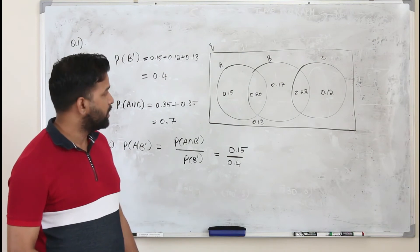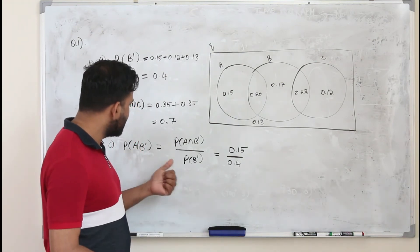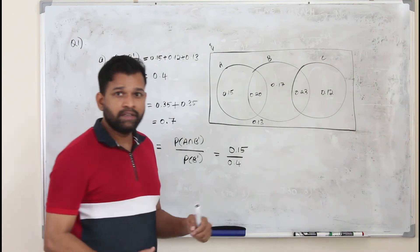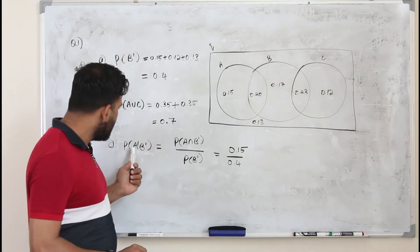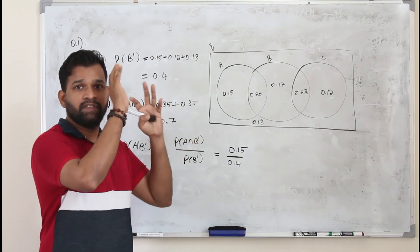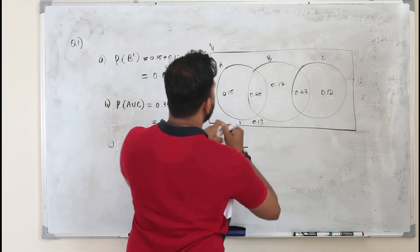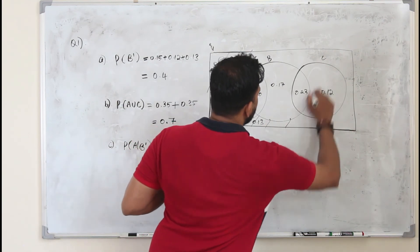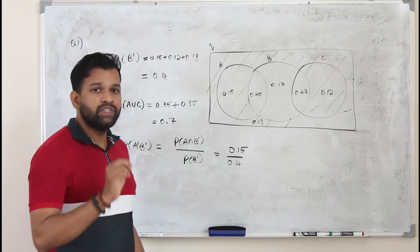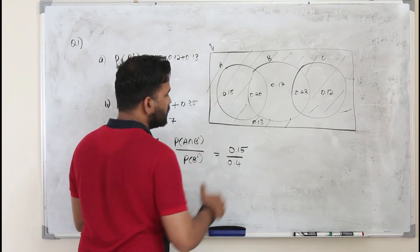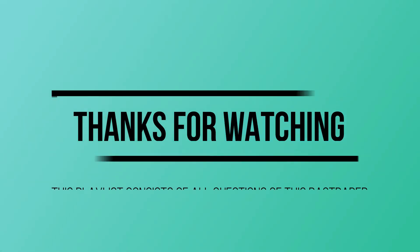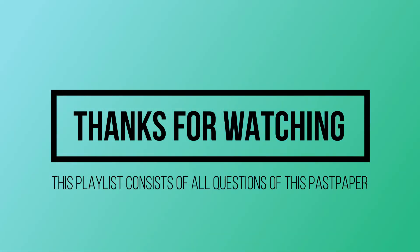This is one way of doing it. Or another method is take this condition P of B dash. B complement is everything outside B. And look for A in B complement. Is there any region of A which lies in the B complement? B complement is everything outside B. This is B complement. So you need to look for a region which is common in A and B complement, which is this. So this common one divided by P of B complement.